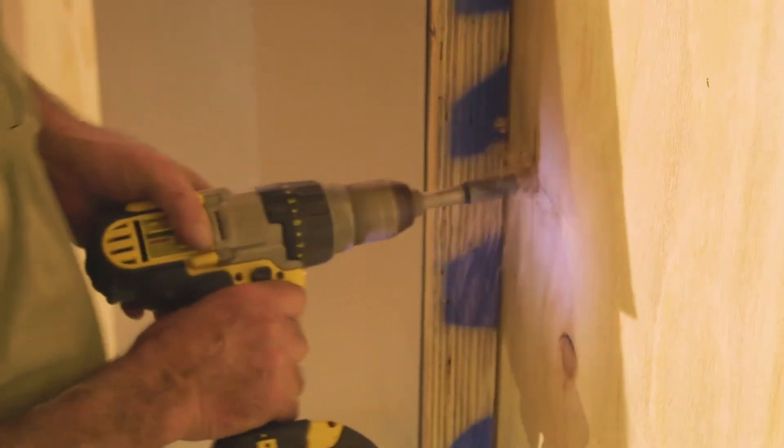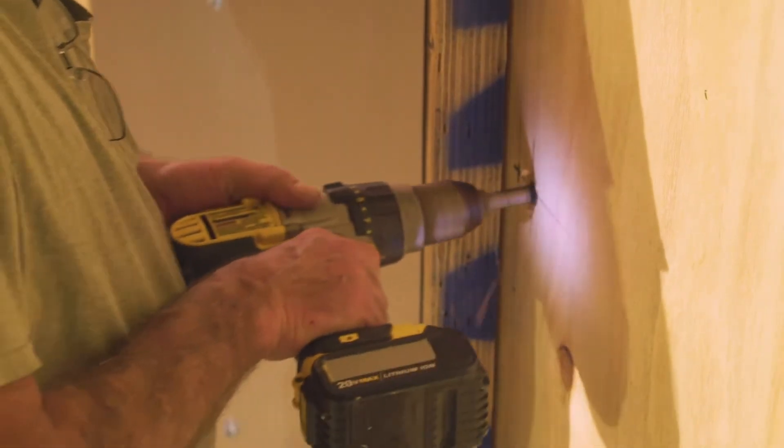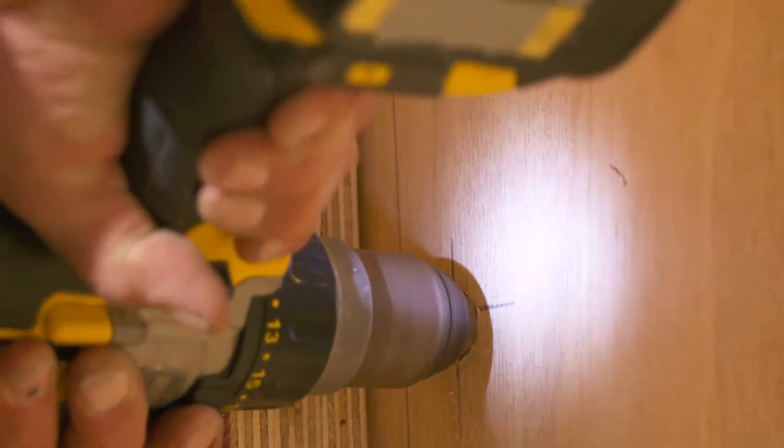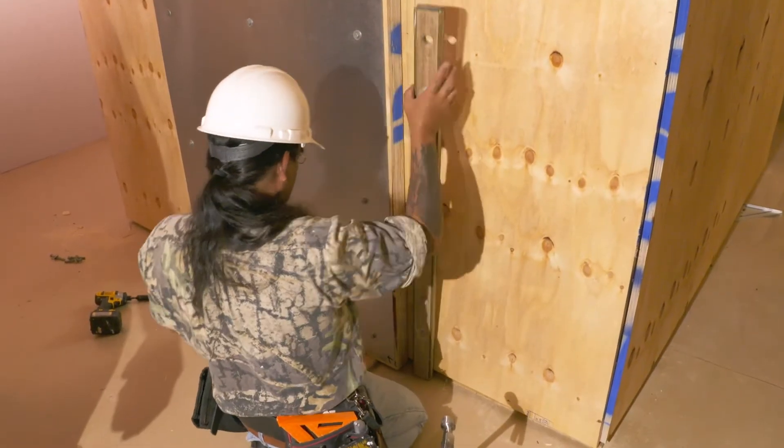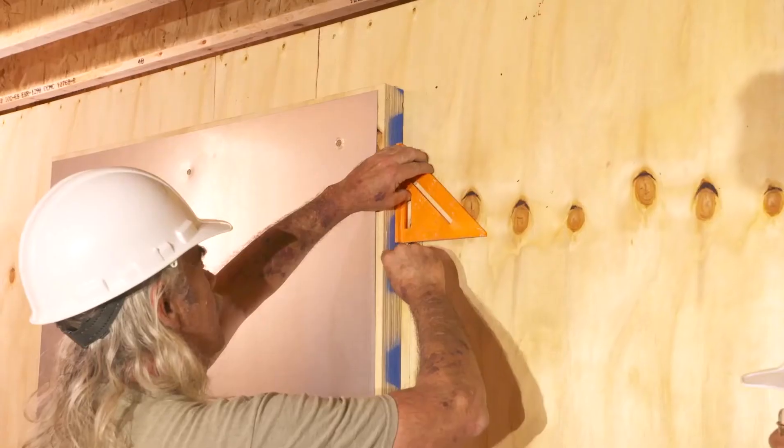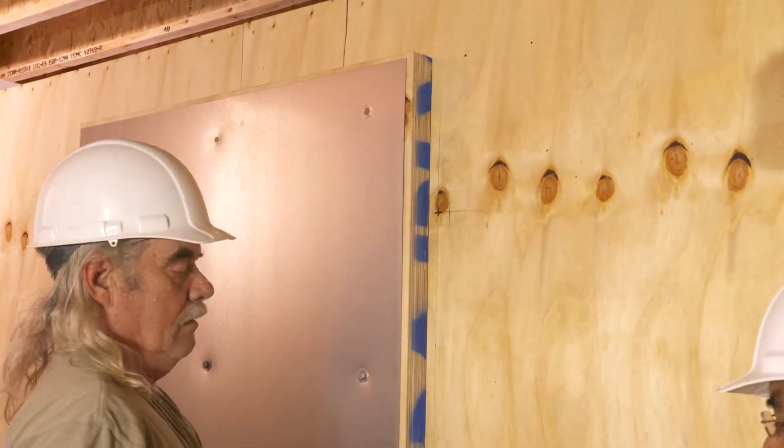Then drill three three-quarter inch holes through the wall for the five-eighths inch diameter bolt hooks. One bolt is located 14 inches from the bottom of the door, the second is located approximately at the center of the door, and the last bolt is 12 inches from the top of the door.